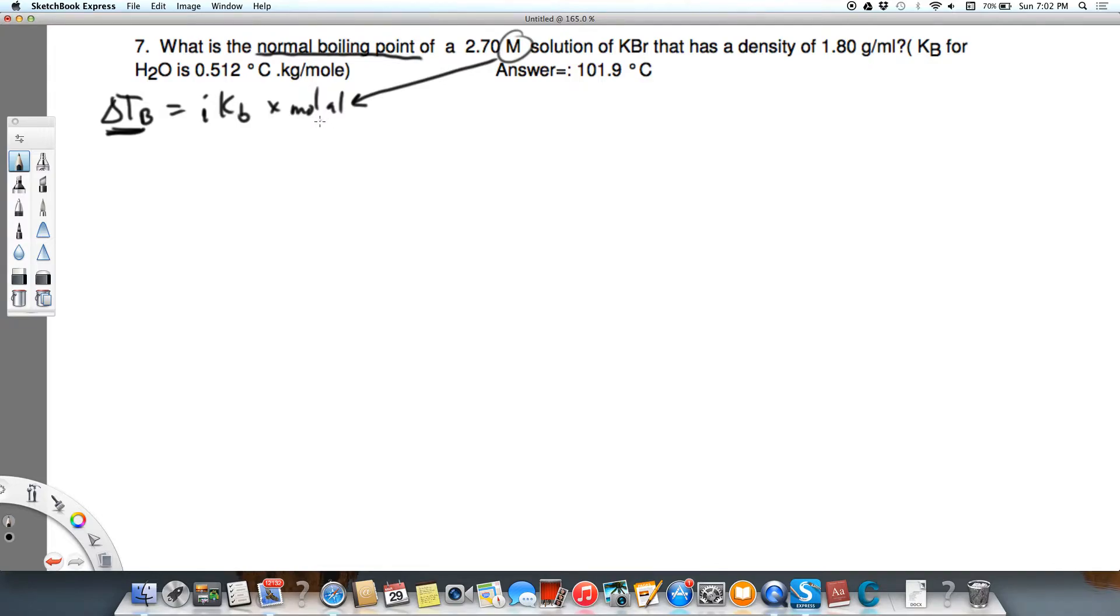And then once we know molal, we know I is going to be 2, and we know what Kb is. So then we can figure it out. That'll be easy. So first of all, we have 2.70 moles of KBr, and that's going to be in 1,000 milliliters of solution.